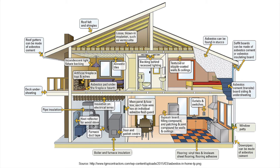In addition to industrial facilities and commercial buildings, asbestos may be found in the building materials used in houses, particularly houses built before 1990. This illustration indicates the types of building materials that may contain asbestos and where they may be located inside a house. Before cutting, sanding, or moving any of these materials, it is recommended that the homeowner have the materials inspected by an accredited asbestos inspector.